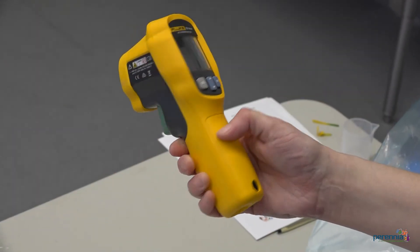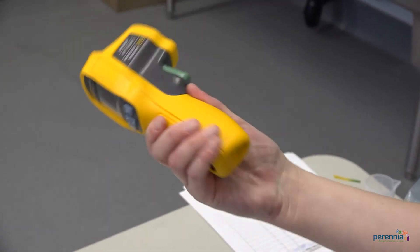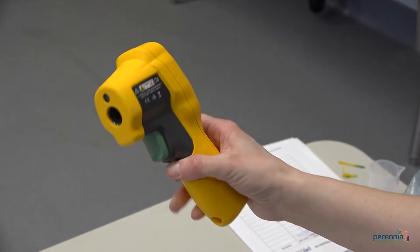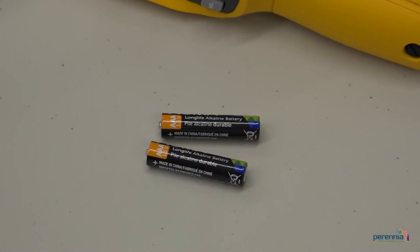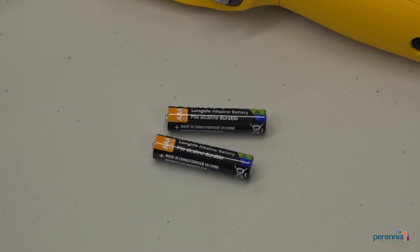To complete the performance verification test, step one, visually inspect your infrared thermometer for cracks or damage. Step two, install a new battery prior to the performance verification test to ensure full functionality.